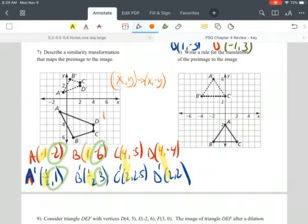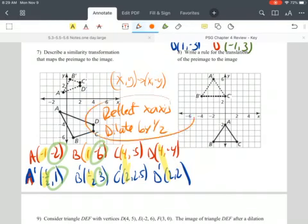So I'm reflecting over the x-axis and then dilating by one half, and you need to have both of those things there.